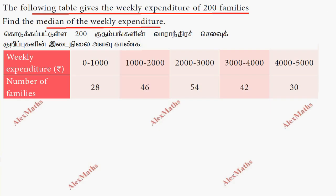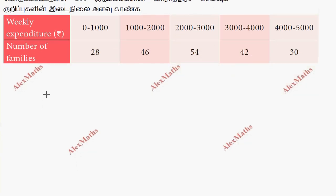We have a class interval and the number of families is the frequency. 0 to 1000 weekly expenditure has 28 families. That's why we have a class interval.